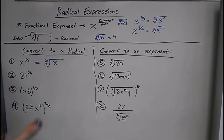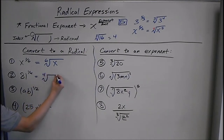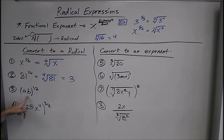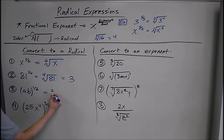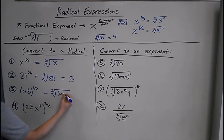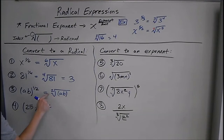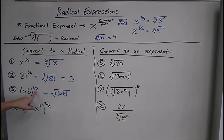It also helps us to simplify things like this. This is the 4th root of 81 to the first power — meaning what times what times what times what is 81 — and we know that's 3. For ab to the 1 half power, we'd have the square root of ab. If it's a square root, we usually write it without the index.